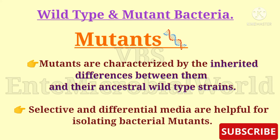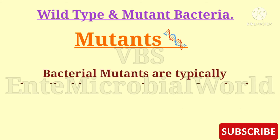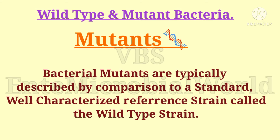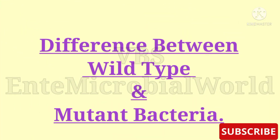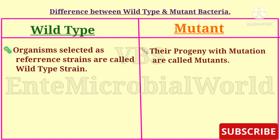Selective and differential media are helpful for isolating bacterial mutants. Bacterial mutants are typically described by comparison to a standard, well-characterized reference strain called the wild type strain. Organisms selected as reference strains are called wild type, and their progeny with mutations are called mutants.